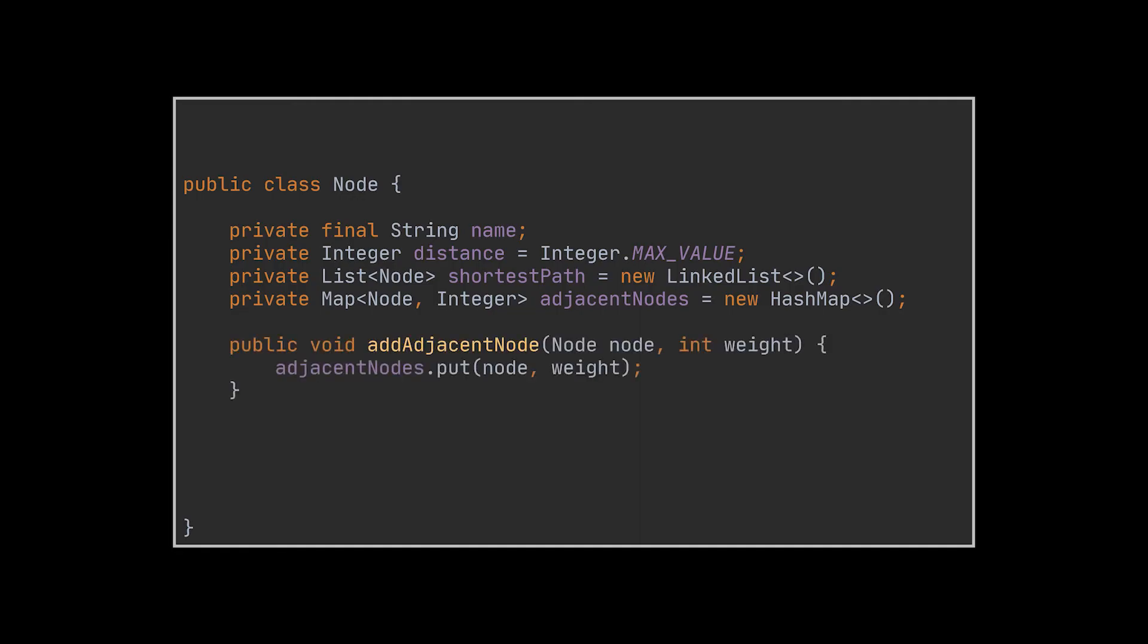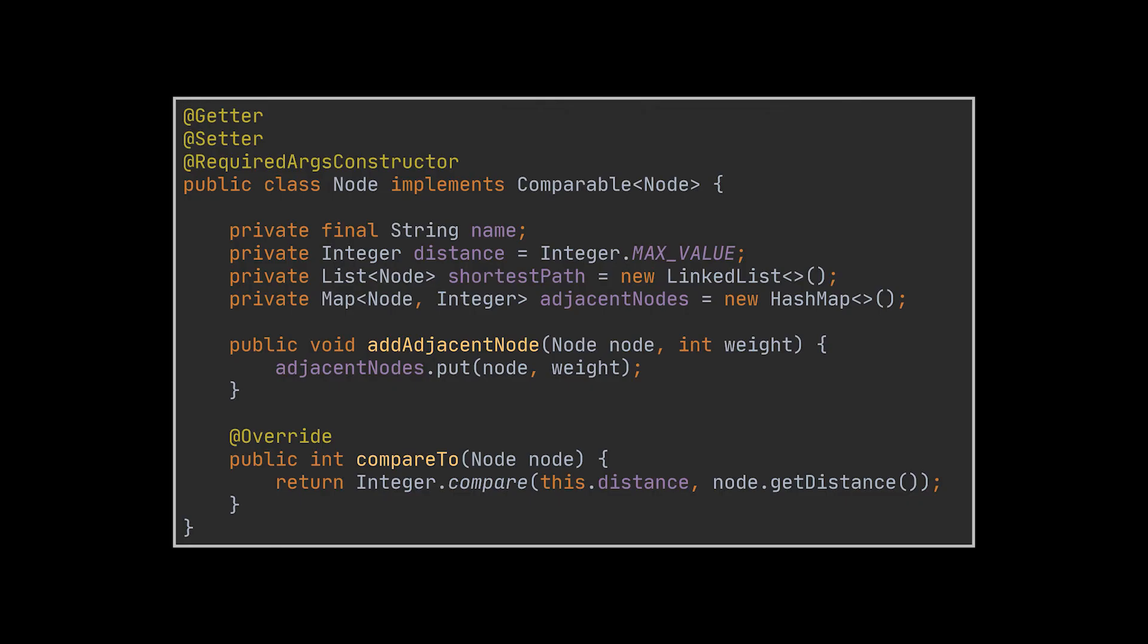To help us with the implementation, I added two helper methods. The addAdjacentNode method which takes a node and the edge weight separating them, and I overrode the compareTo method. This was done because we will be making use of a priority queue to poll the unsettled node with the smallest distance. I also made use of Lombok annotations and if you have no idea what these are, I will leave a link to our video on Lombok in the description box down below.